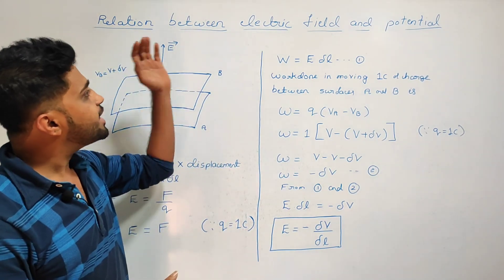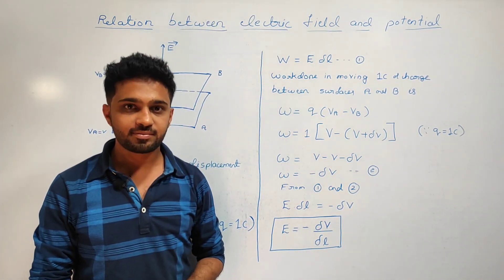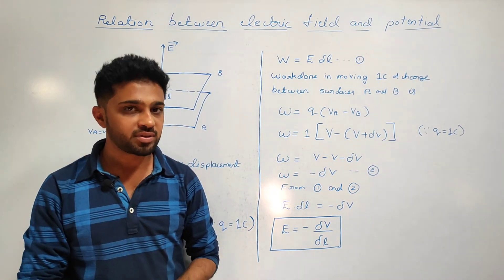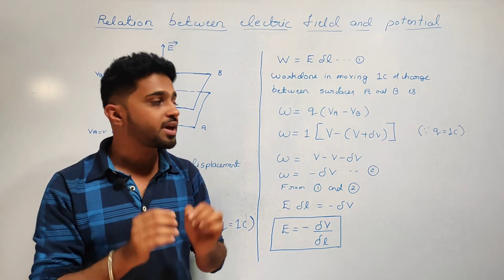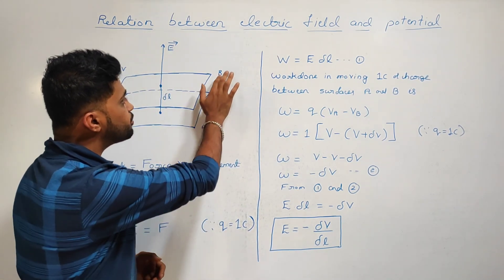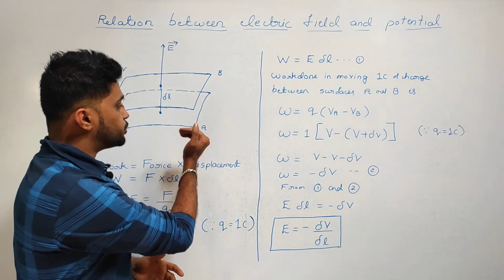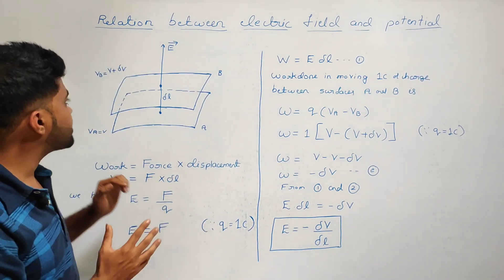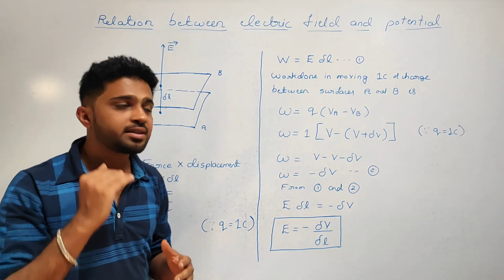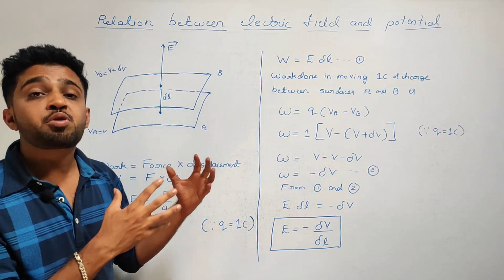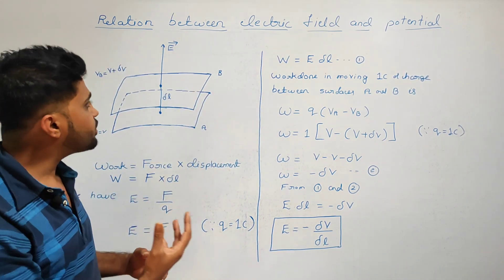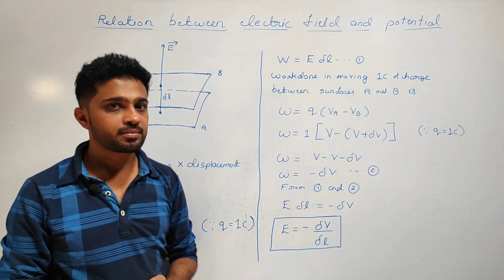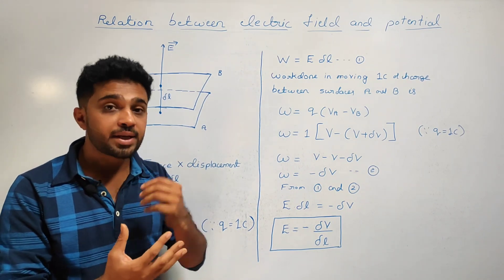Now we are deriving the relation between electric field and electric potential. We consider two equipotential surfaces A and B. Equipotential surface A has potential V, and equipotential surface B has potential V plus delta V. The direction of the electric field is A.